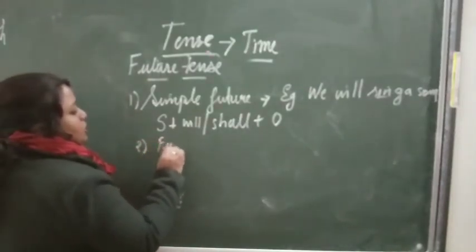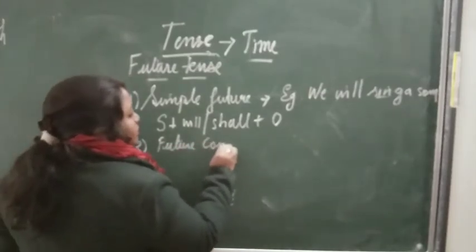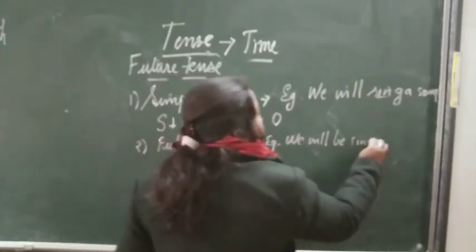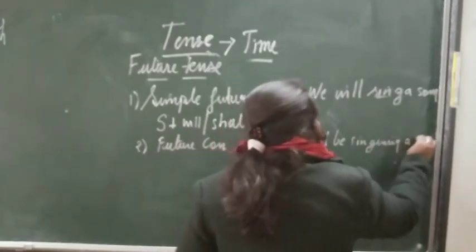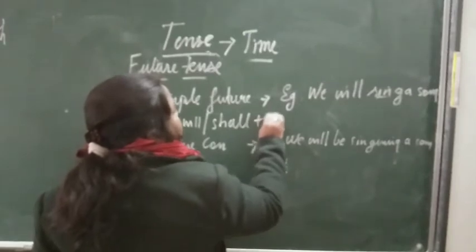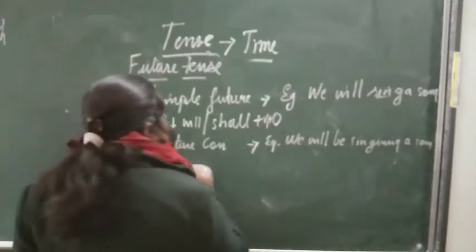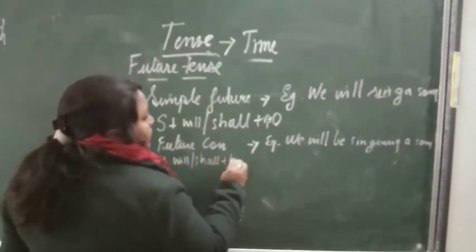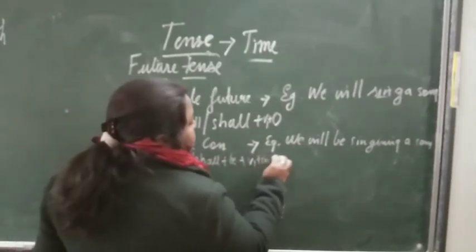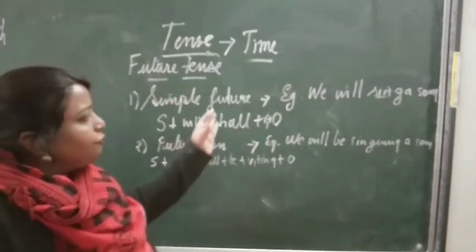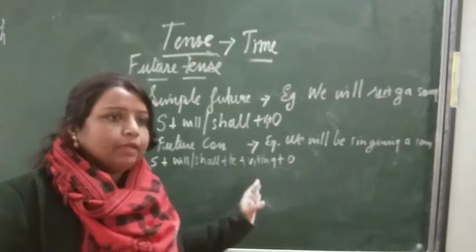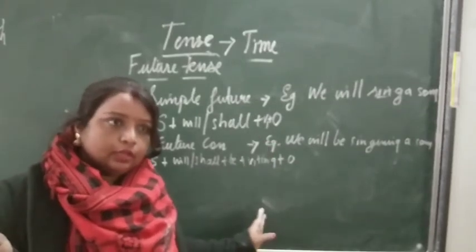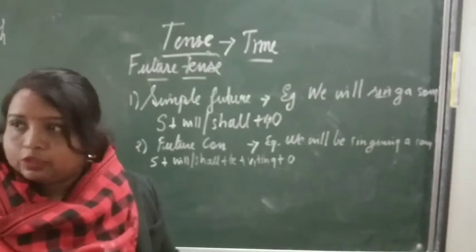Second is future continuous. Here, future continuous: we will be singing a song. So here, same thing — you can use verb first form. Sing is there, but here the structure is: subject plus will or shall plus be plus verb first form plus -ing plus object. In the middle, the verb is almost the same in all tenses, leaving the past tense. In past, we use verb second and third form, but in present and future the verb form stays the same.